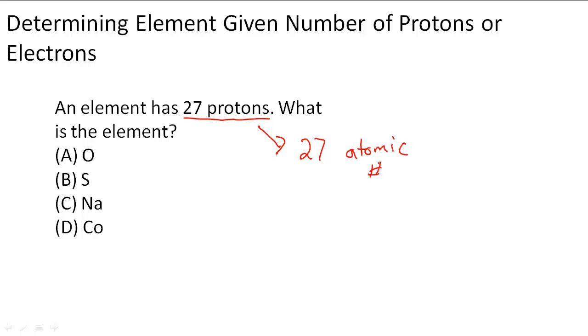And to figure out what element it is, all we have to do is go look in the periodic table. So we would look across the rows and see when we get to the atomic number 27. So left to right it increases. And then I can see that when I get to 27 I get Co or cobalt.